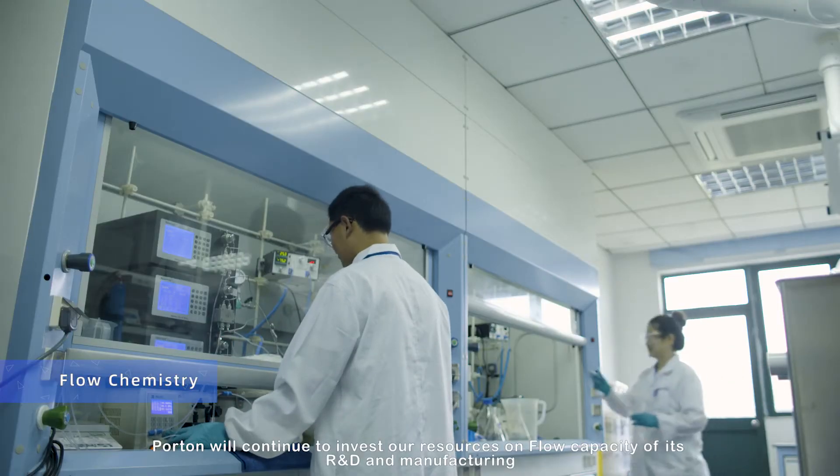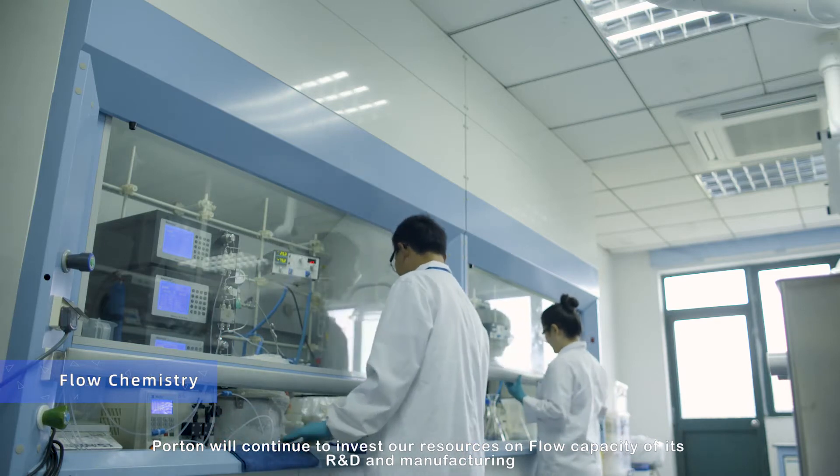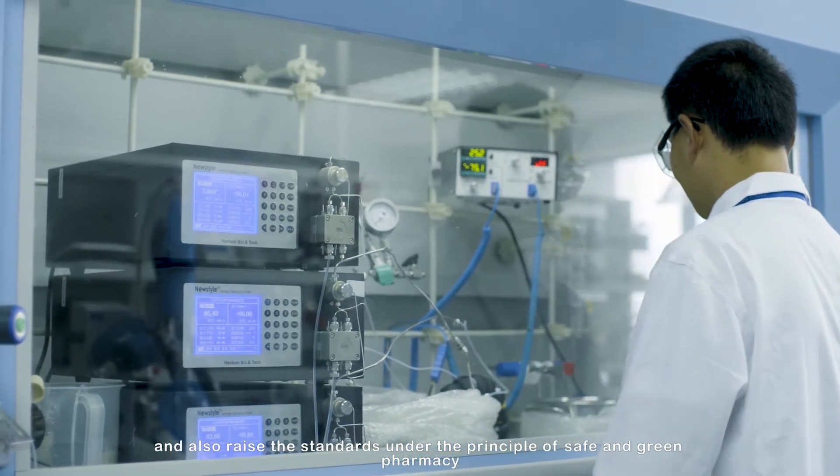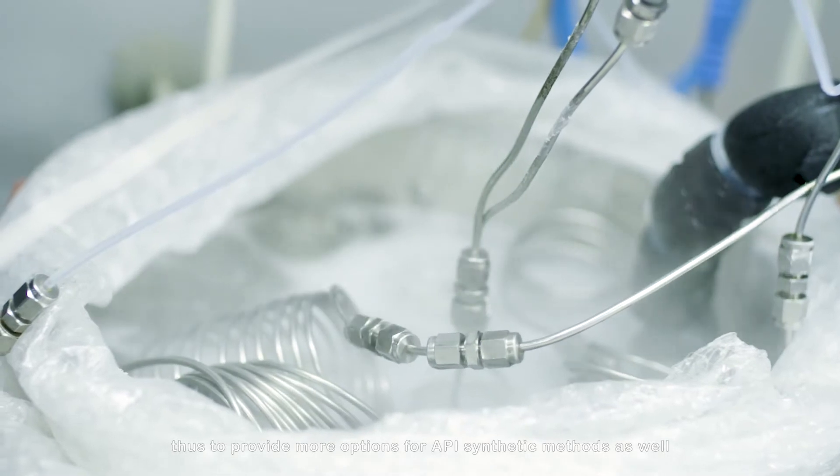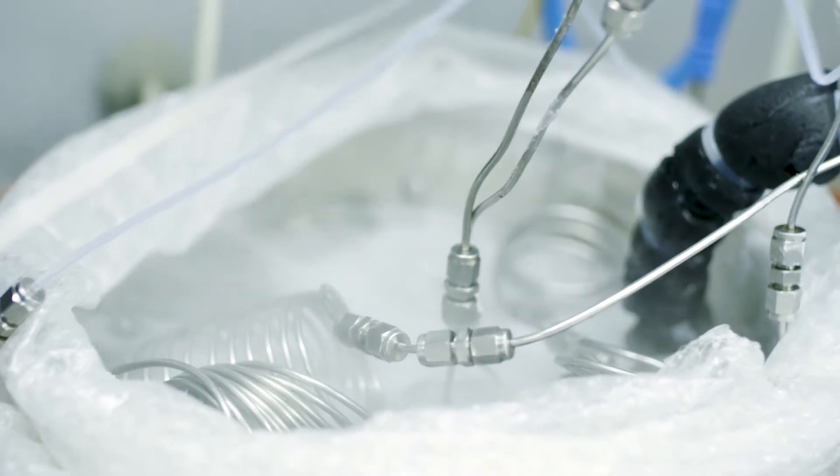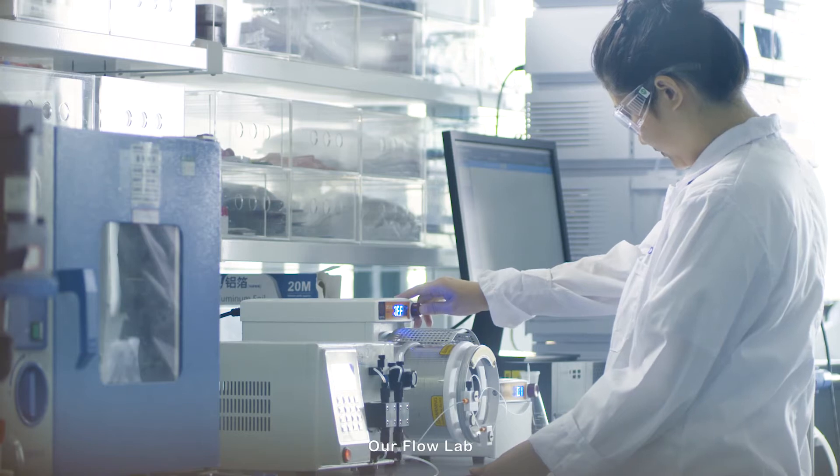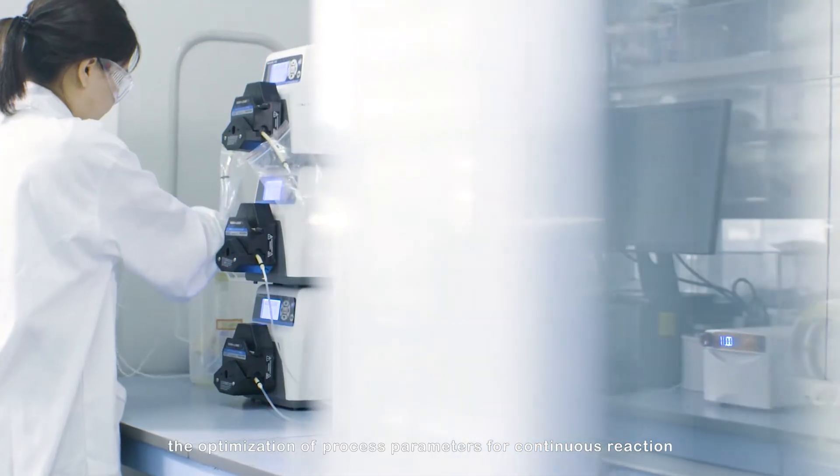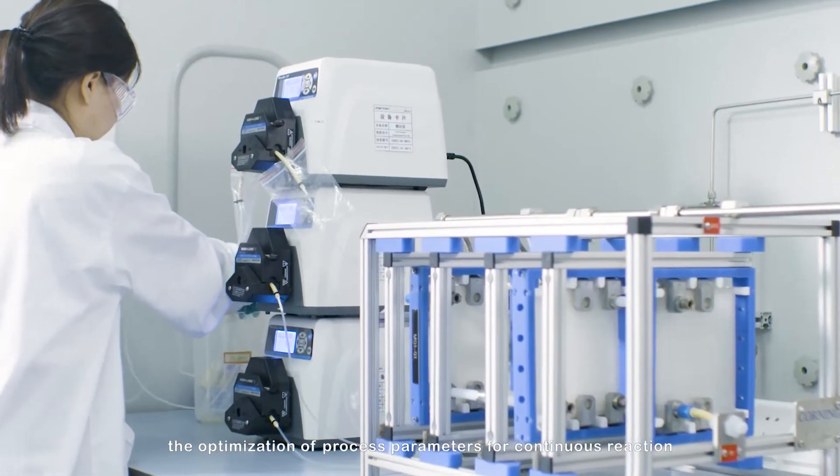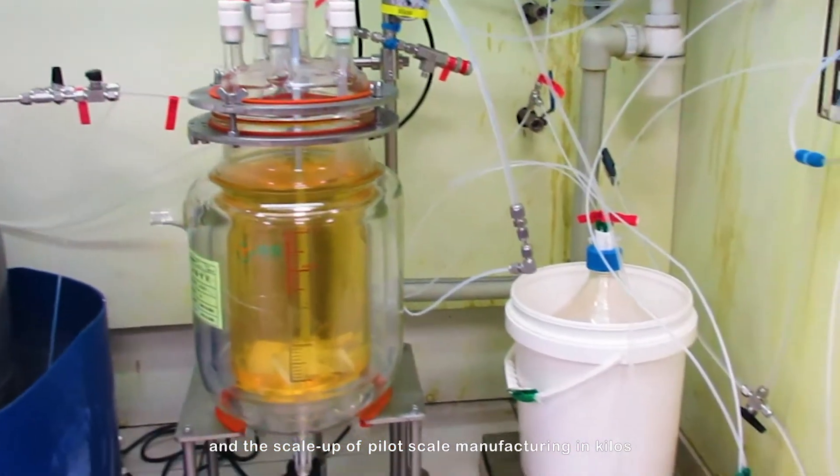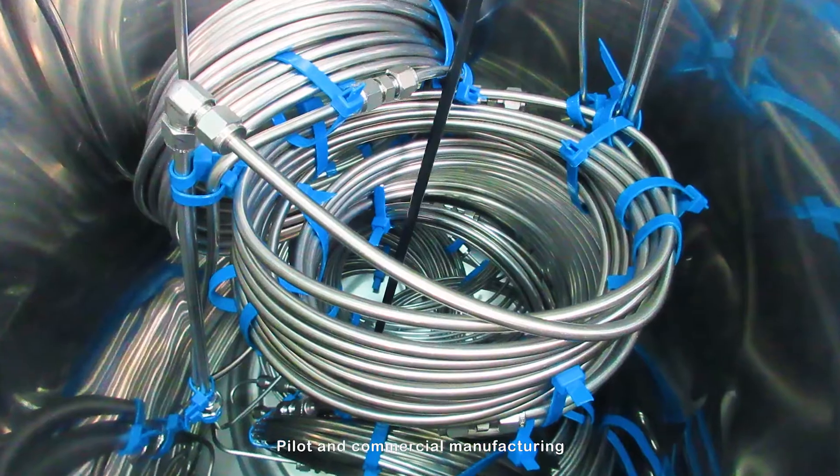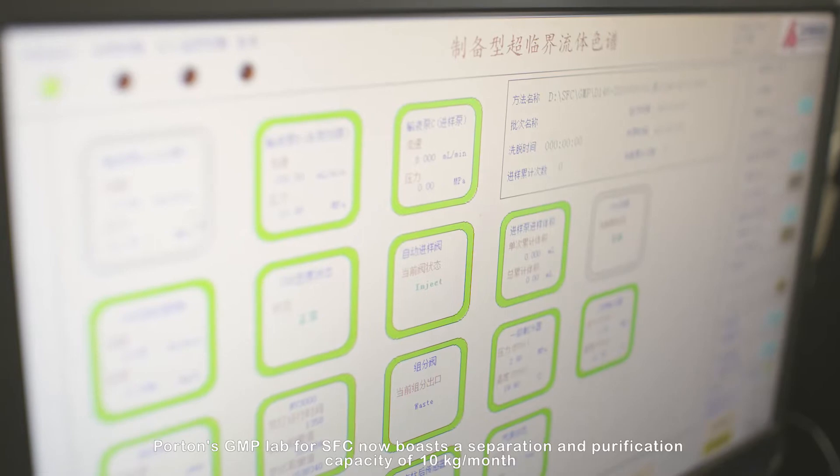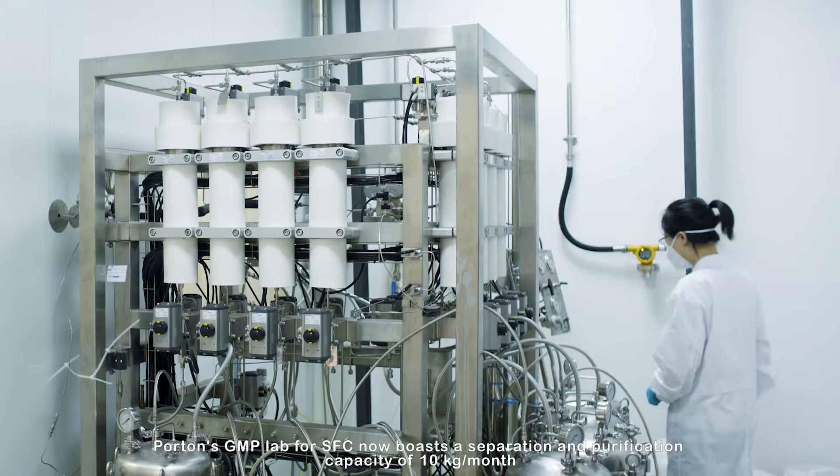Porton will continue to invest our resources on flow capacity of its R&D and manufacturing, and also raise the standards under the principle of safe and green pharmacy. Thus, to provide more options for API synthetic methods. Our flow lab mainly focuses on the process development and screening of continuous reactions, the optimization of process parameters for continuous reaction, and the scale-up of pilot-scale manufacturing in kilos, providing support for commercial manufacturing. Porton's GMP lab for SFC now boasts a separation and purification capacity of 10 kilograms per month.